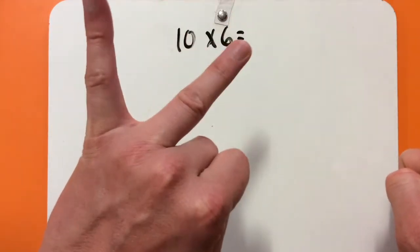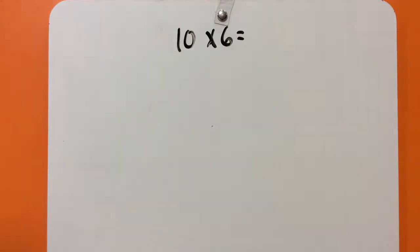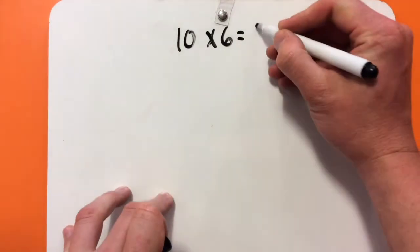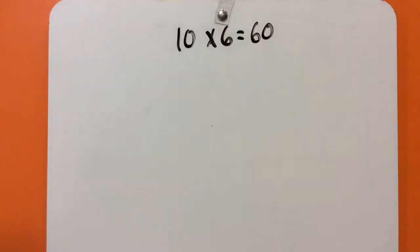20, 30, 40, 50, 60. So, 10 times 6 equals 60. So,